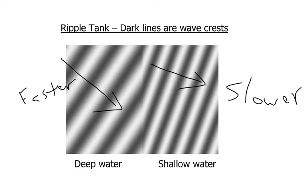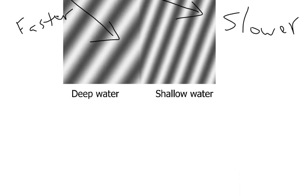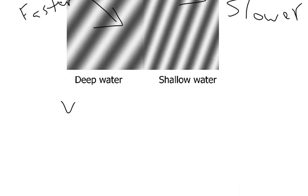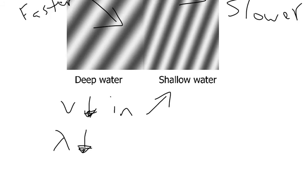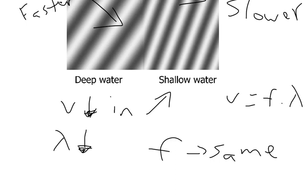This is really important and a bit counterintuitive. In shallower water, velocity decreases and wavelength decreases, but frequency stays the same. This is possible because of the equation v = f × λ (velocity equals frequency times wavelength). If velocity decreases and wavelength decreases, then frequency can stay the same. That's the idea of refraction.